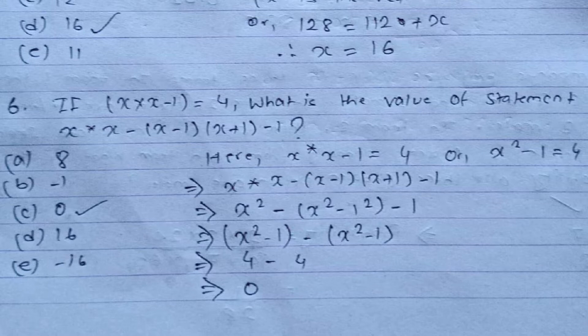Question six: given that x(x − 1) = 4, what is the value of x·x − (x − 1)(x + 1) − 1? This can be rewritten: x squared is x², and (x − 1)(x + 1) equals x² − 1 by the difference of squares formula. So the expression becomes x² − (x² − 1) − 1 = x² − x² + 1 − 1 = 0. We know x² − 1 = 4 in both terms, giving −4 − (−4) ... which simplifies to 0. The correct answer is option C.